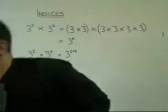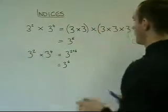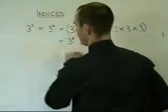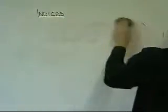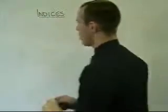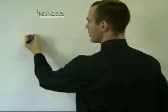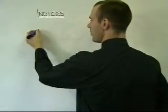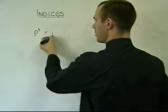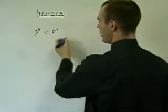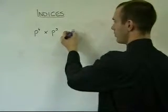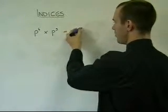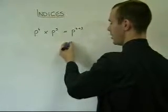This works exactly the same for algebra. If we try a similar question with algebra, such as p to the power of 4 times p to the power of 3, this is just simply going to be p to the power of 7, or 4 plus 3, p to the power of 7.